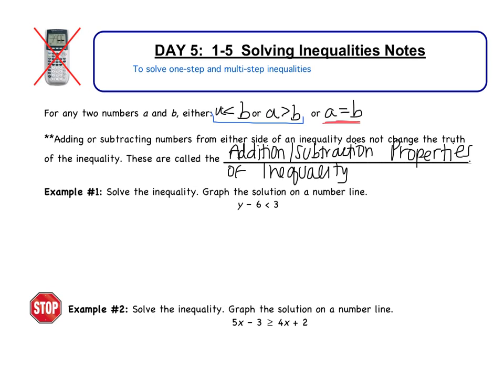Because you've done this before, we're going to jump right into an example. Example number one: solve the inequality and graph the solution on a number line. I have y subtract 6 is less than 3. You're going to solve this as if it were an equal sign. If I'm subtracting 6, the inverse of that would be adding 6. So I get y is less than 9, because 3 plus 6 is 9. That's the solving part.